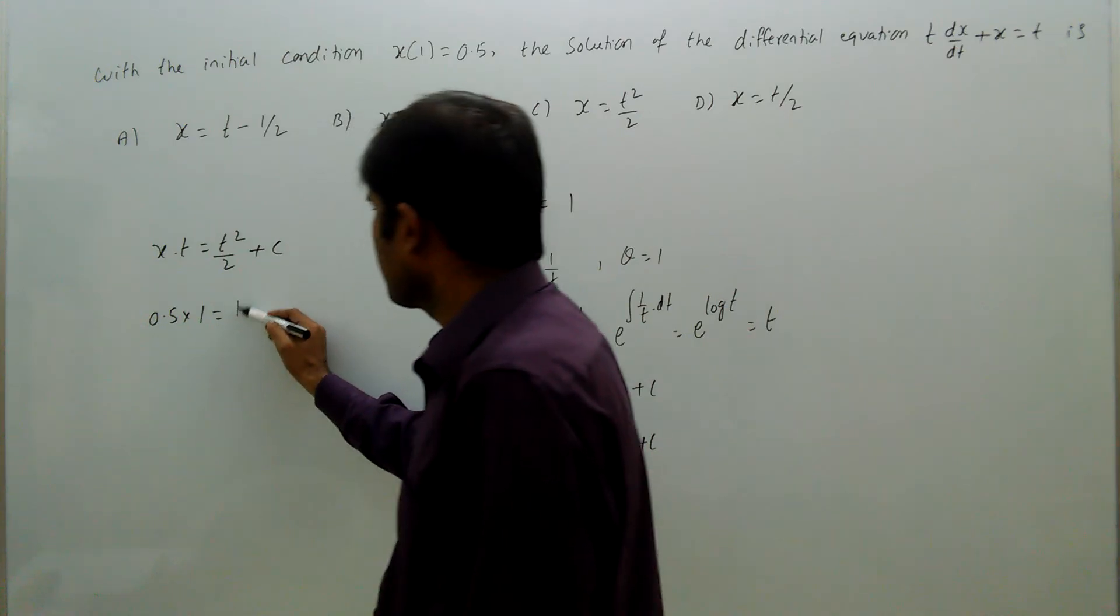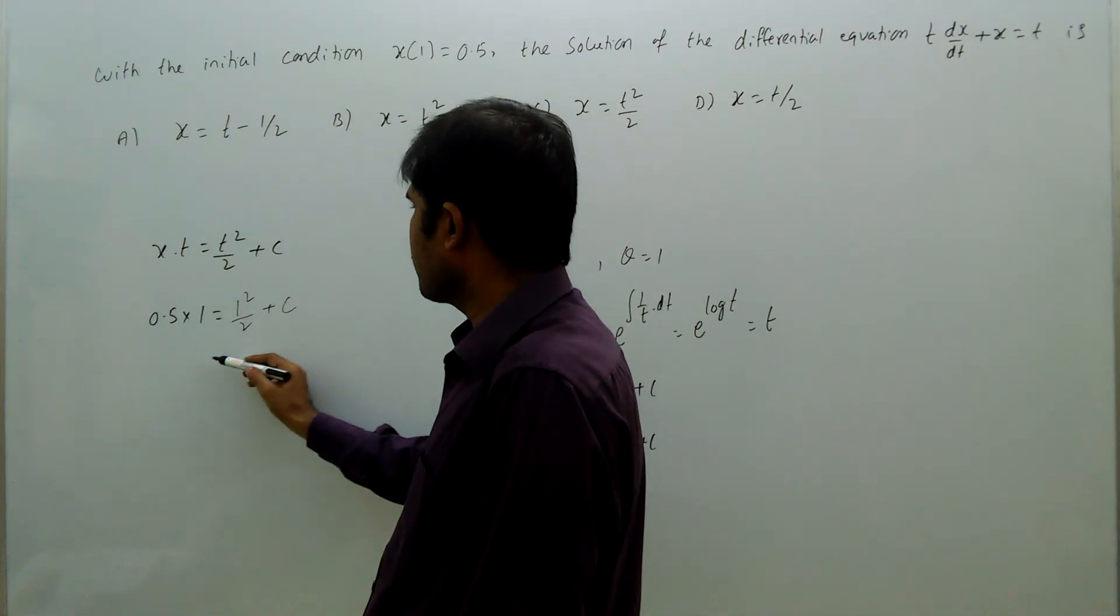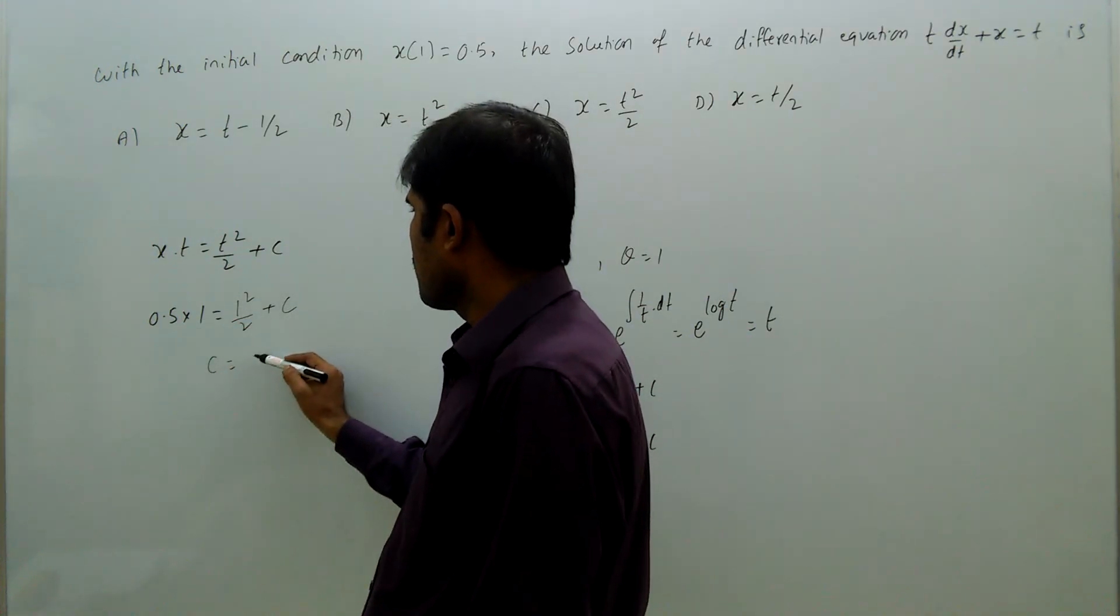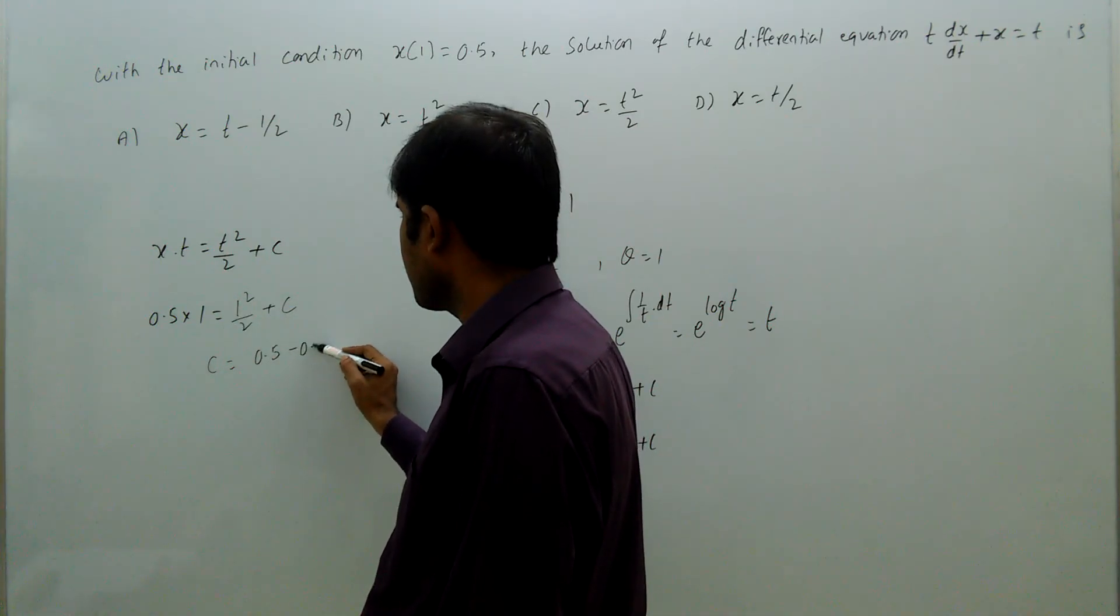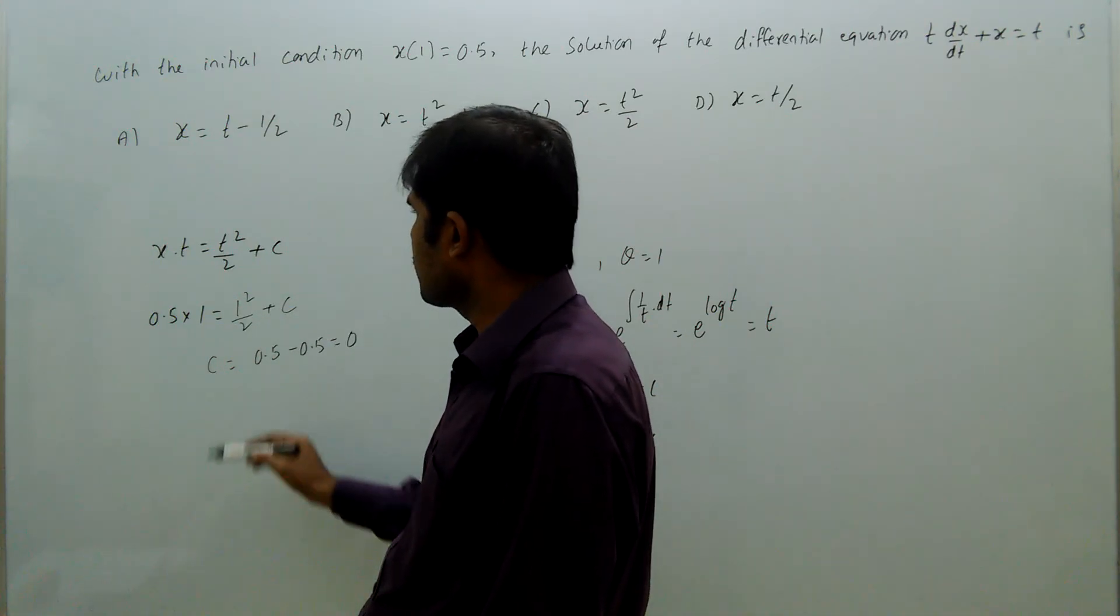From this, c equal to 0.5 minus 0.5, that is equal to 0. C is 0.